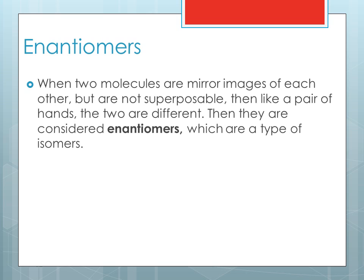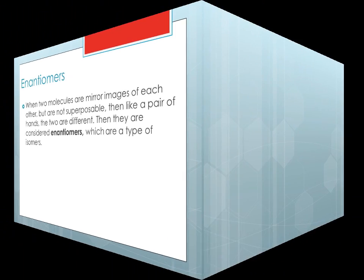When two molecules are mirror images of each other but are not superposable, then like a pair of hands, the two are different. They are then considered to be enantiomers, which are a type of isomer.